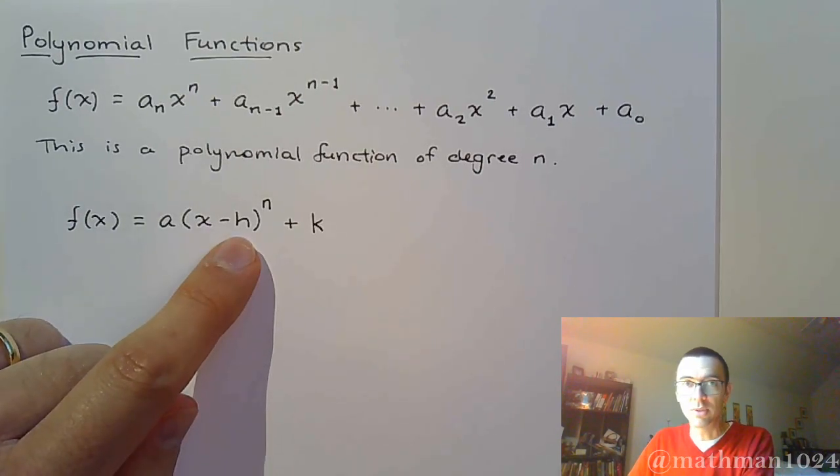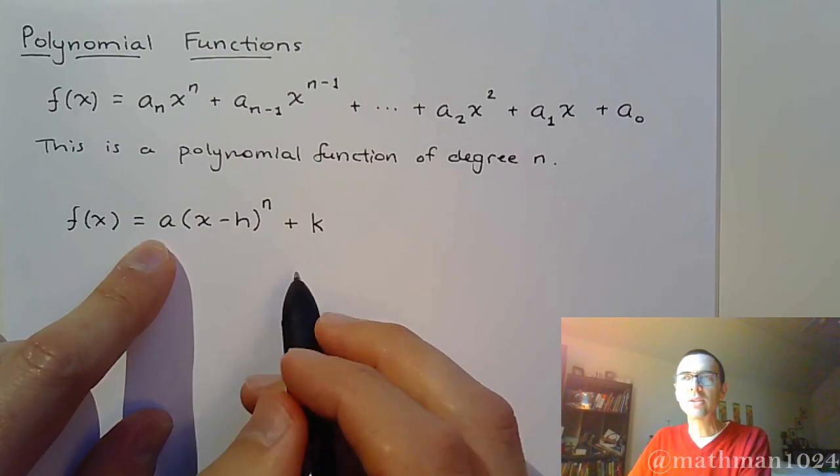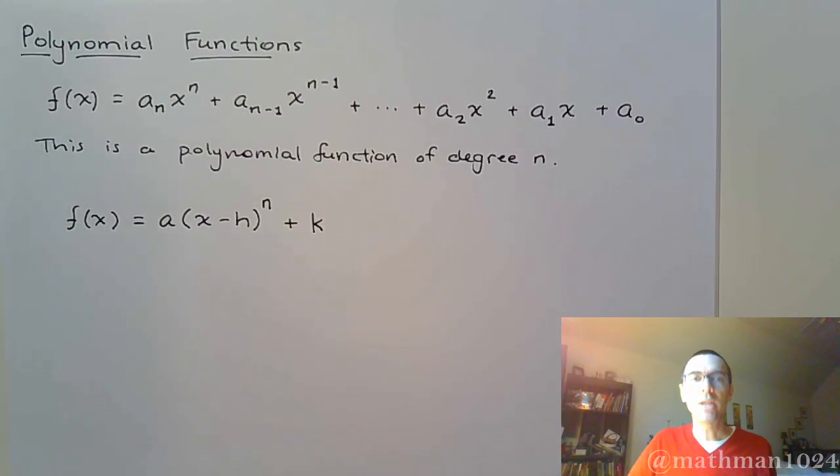The h tells you how you move to the left or to the right, k tells you how you move up or down. And the a can determine kind of the orientation of things.